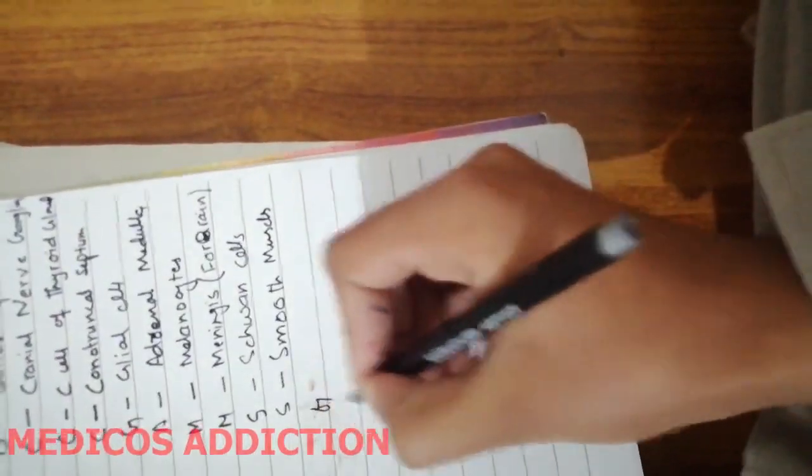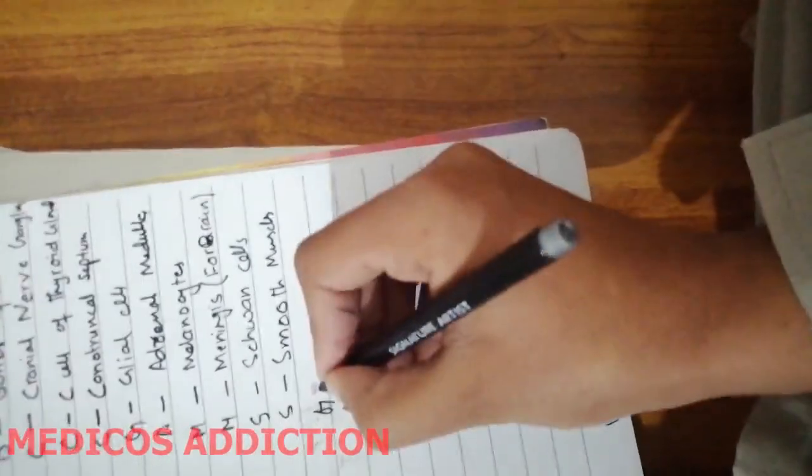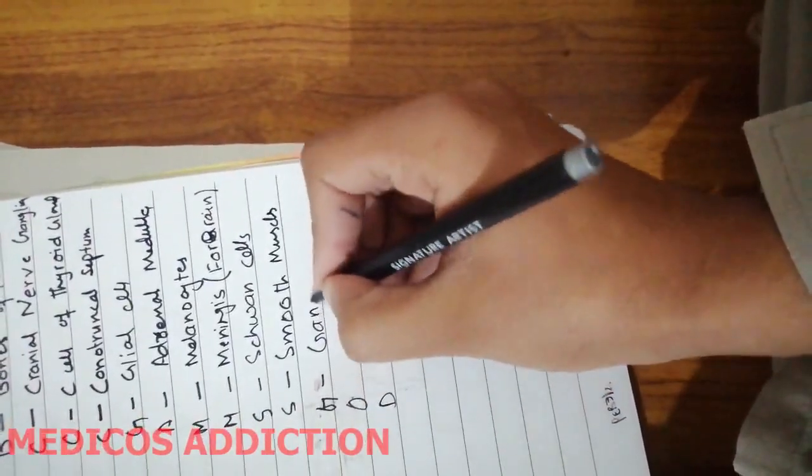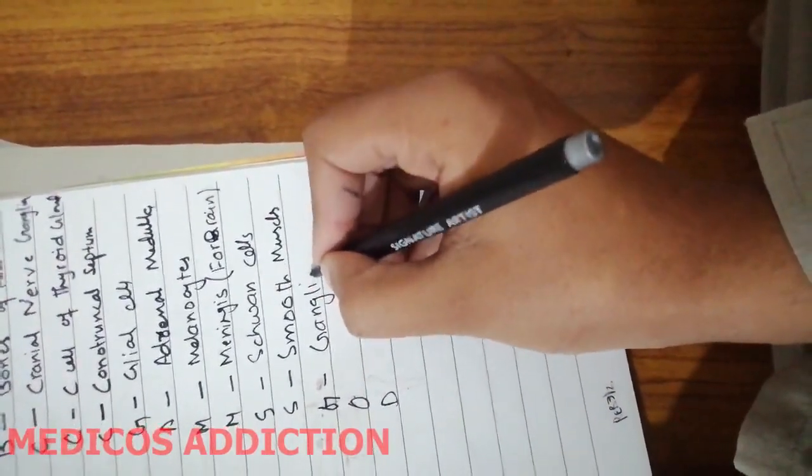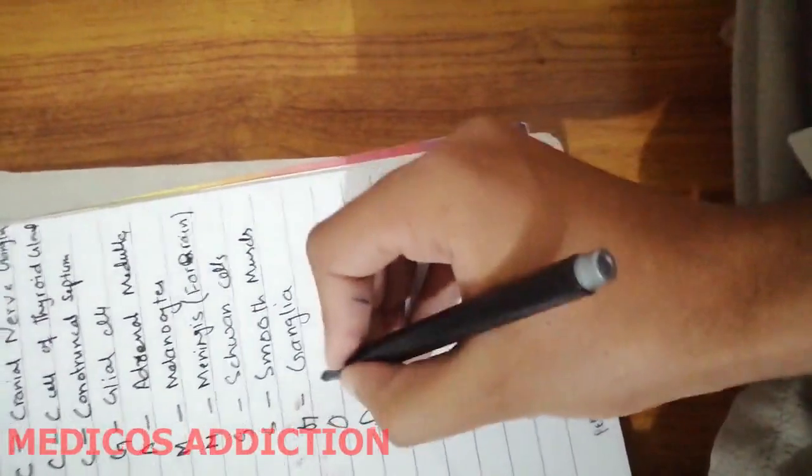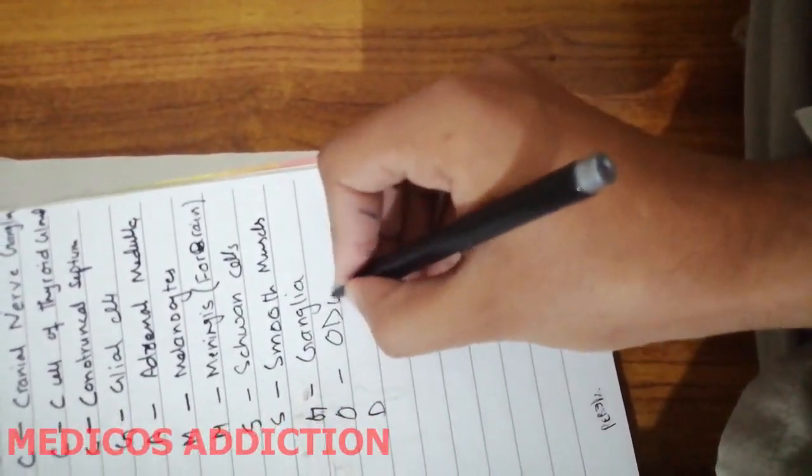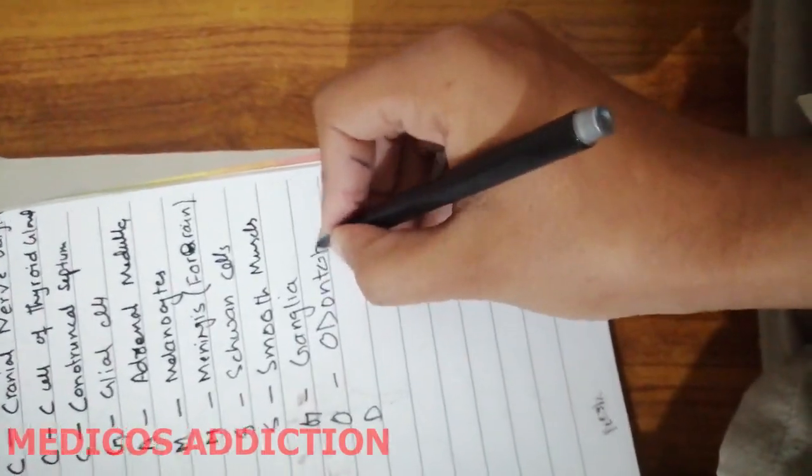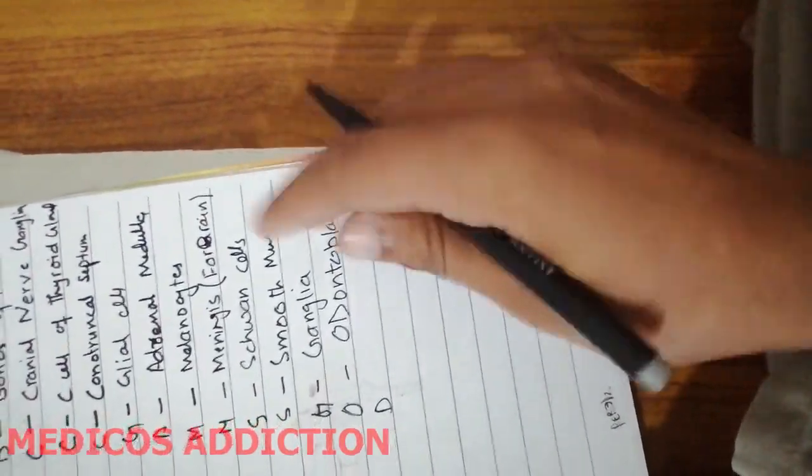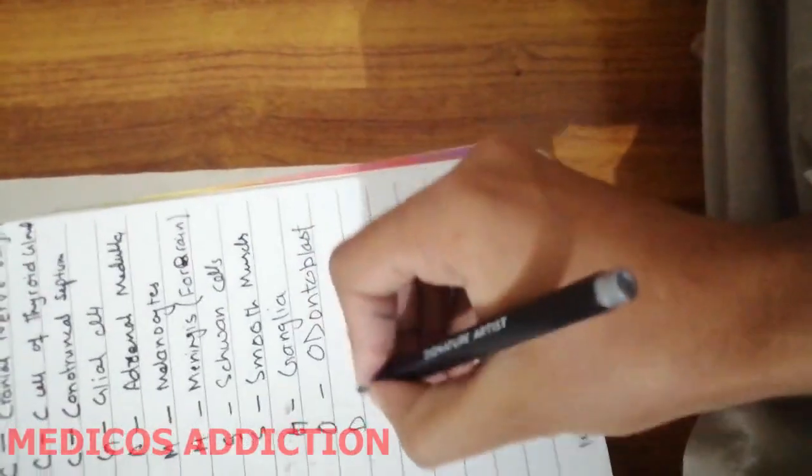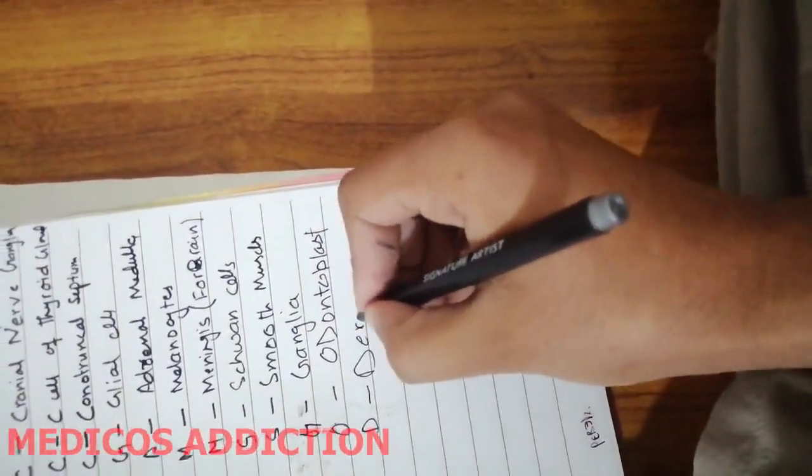Now these three words: GOD. G for ganglions - all the spinal ganglions and sympathetic chain ganglions. O for odontoblast, which are the cells of teeth. And D for dermis of face and neck.